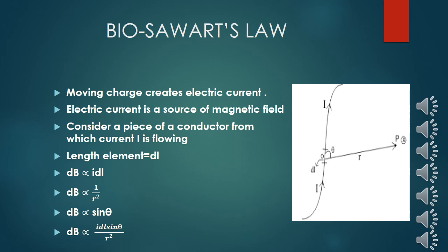Biot-Savart's law tells us the relation between a few quantities — the strength of the magnetic field created by current. There is a current and there is a magnetic field. For that, we take an example. We have taken a conductor — a small element of a conductor from which current I is flowing. If there is a current, there is a certain magnetic field. We have taken one point P, and there is a magnetic field created there. He made a law to determine how much is the magnetic field.